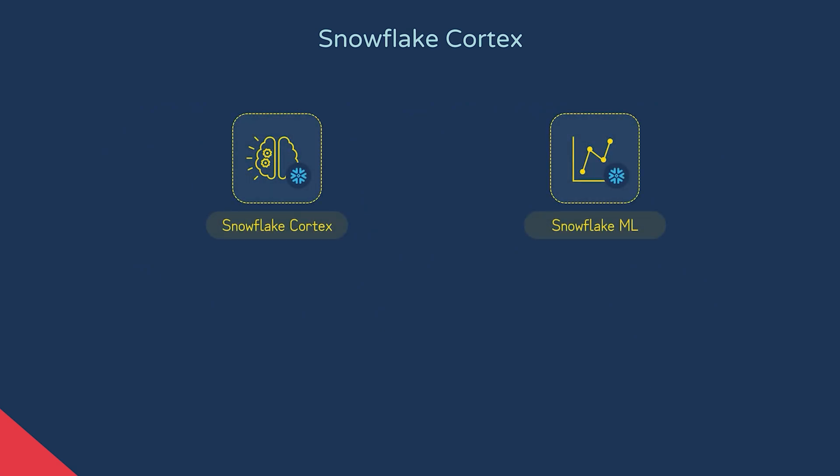Broadly, there are two groups of artificial intelligence features: Cortex and machine learning.